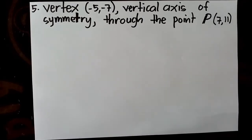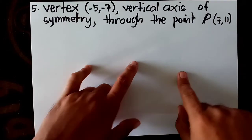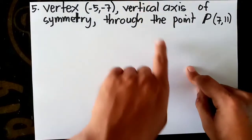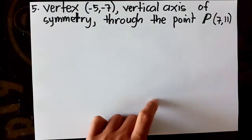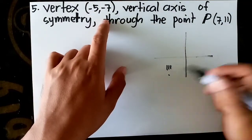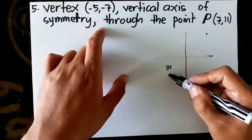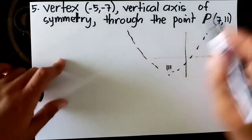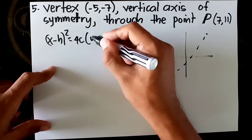Number 5: vertex (-5, -7), vertical axis of symmetry, passing through the point (7, 11). When the axis of symmetry is vertical, the parabola opens upward or downward. The vertex is in quadrant 3 (negative, negative), and the given point (7, 11) is in quadrant 1 (positive, positive). So the parabola opens upward. The equation form is (x - h)² = 4c(y - k), positive since upward.